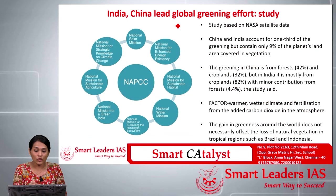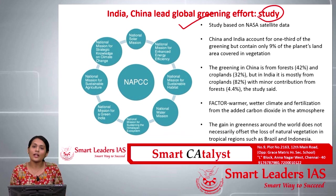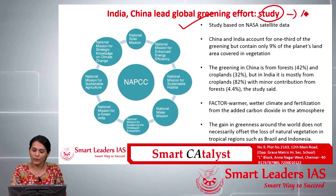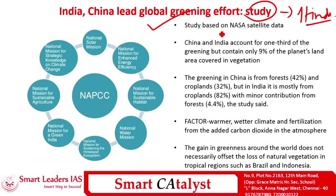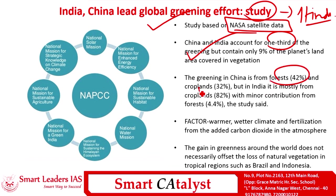The fourth article, taken from The Hindu, is about India and China leading the global greening effort as per a NASA satellite study. The study, based on NASA satellite data, counters the global view that India and China as developing countries contribute more to global warming and climate change. The report says India and China account for one-third of global greening. In China, 42% of greening comes from forests and 32% from croplands. In India, 82% comes from croplands. Both countries are global leaders in the greening effect.